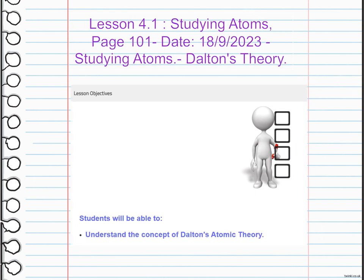Dalton's atomic theory, proposed by John Dalton in the early 19th century, laid the foundation for modern atomic theory. According to Dalton, atoms are invisible and indestructible particles that combine in fixed ratios to form compounds.